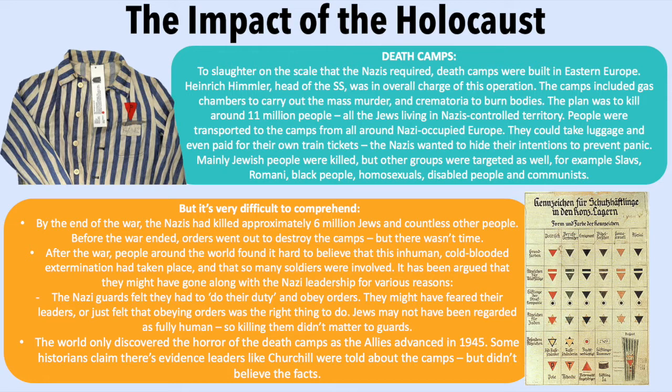People were transported to the camps from all around Nazi-occupied Europe. They could take luggage and even paid for their own train ticket, as the Nazis wanted to hide their intentions to prevent panic. Mainly Jewish people were killed, but other groups were targeted as well — for example, Slavs, Romani, black people, homosexuals, disabled people, and communists.